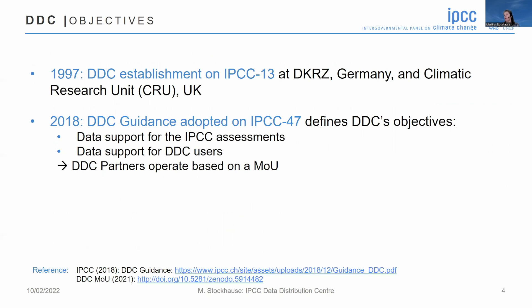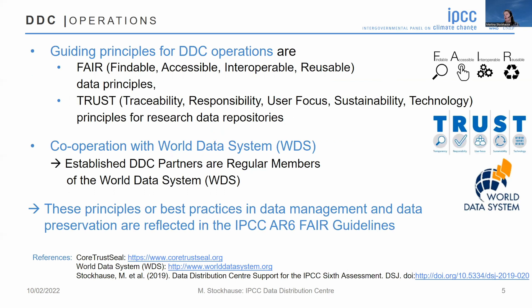The DDC was established in 1997 in Germany and the UK. The main objectives of the DDC are described in a DDC guidance document from 2018, to support the IPCC assessment report and the DDC users in relation to data questions. The DDC partners operate based on a memorandum of understanding. The DDC, as any other repository, is guided by best practices in data management and data long-term preservation. The two most important are the FAIR data principles — findable, accessible, interoperable, and reusable data — and the TRUST principles describing the effort of research data repositories.